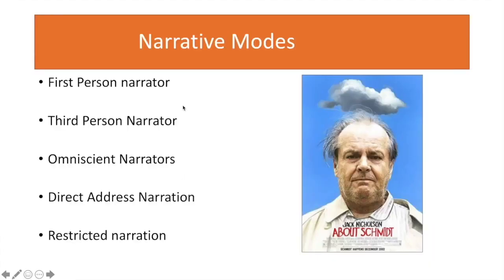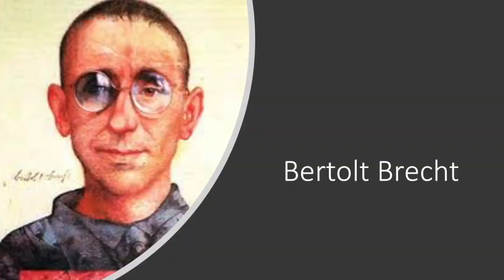The first three modes were employed by literature and borrowed by cinema. But as you saw in the American Psycho clip, using first-person narration in cinema can be very different from literature. The next mode — direct address — is something used in theater first, traced back to ancient Greece and then Shakespeare, but theorized by German playwright Bertolt Brecht.